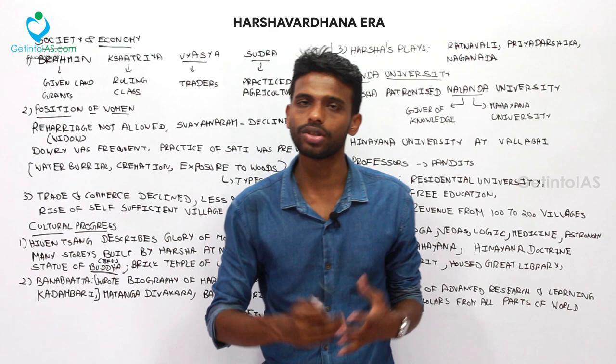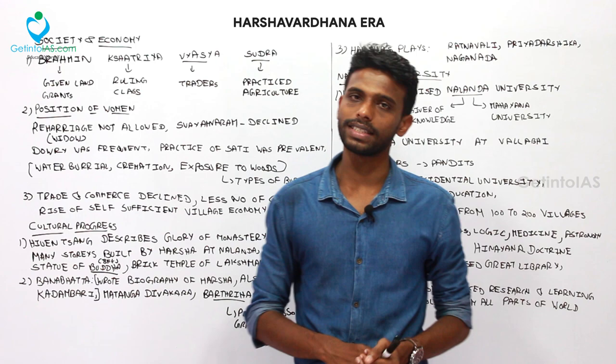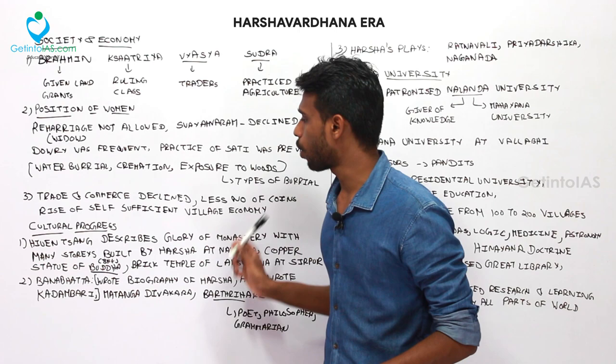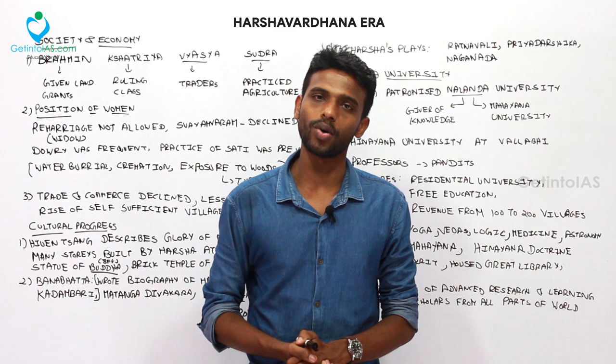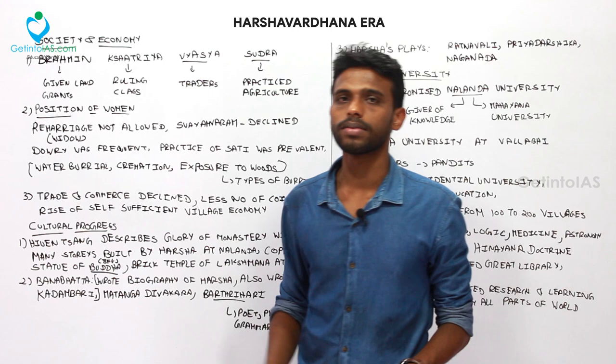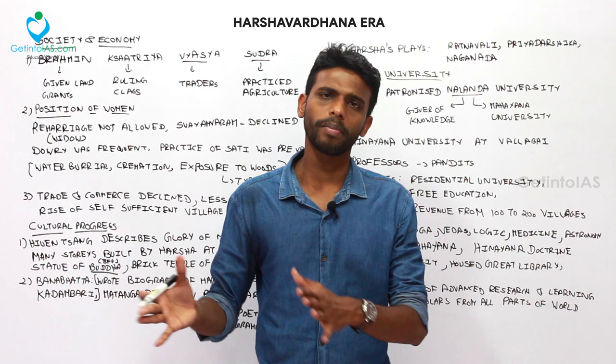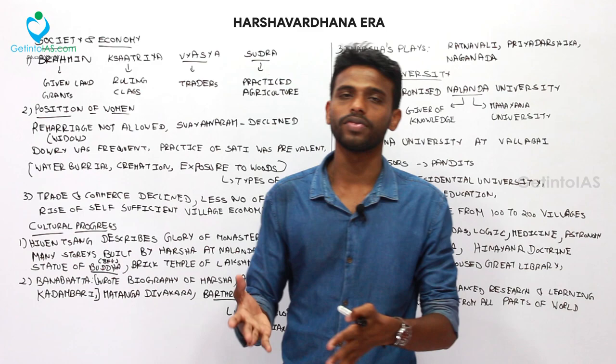Regarding literary contributions, Banabhatta wrote the biography of Harsha called Harsha Charita, and also wrote Kadambari. Other poets and philosophers who adorned Harsha's court included Matanga Divakara and Bhartrihari. Bhartrihari was a poet, philosopher, and grammarian. Because Harsha was a patron of learning, many scholars and poets were present in his court.